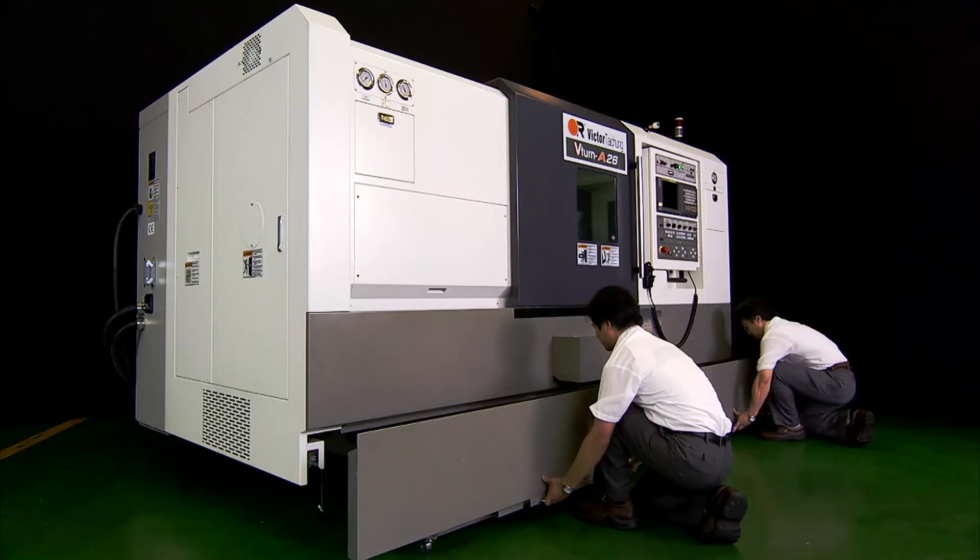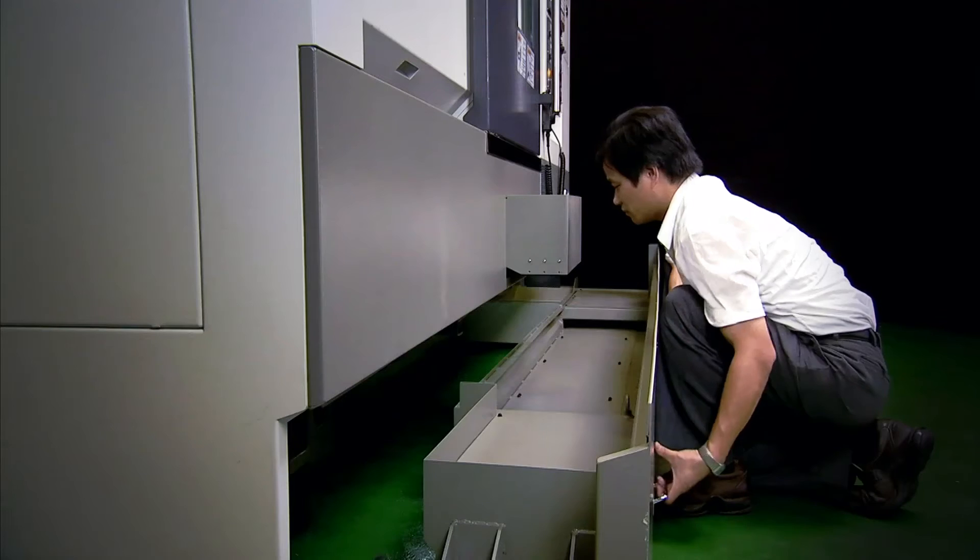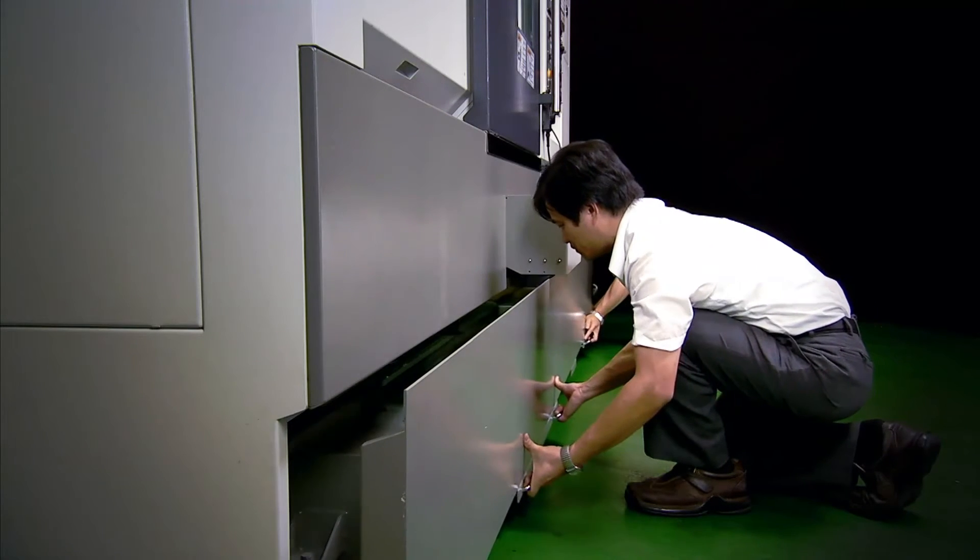Chip conveyor follows the coolant tank to be removed from the machine front, reducing floor space requirement.